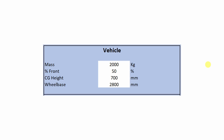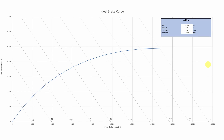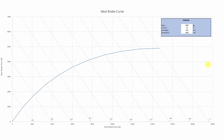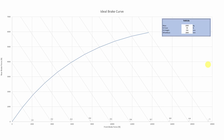Let's go back to our 50% weight distribution car and now change the height of the center of gravity from 550 mm to 700 mm. We see how the curve has changed again. The higher center of gravity means there will be more weight transfer as we brake harder, so we lose stopping ability at the rear axle and need to get more power from the front axle. Look again at the case of a 550 mm CG height versus our 700 mm CG height — you can see the difference in the curves.